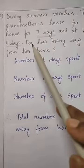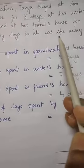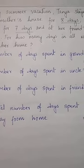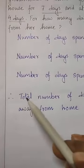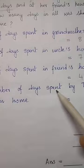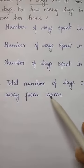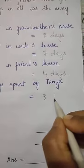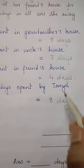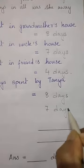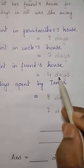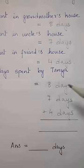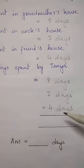The last part is: for how many days in all was she away from her home? That means again you have to add all the days. Total number of days spent by Tanya away from home is equal to 8 days plus 7 days plus 4 days. Here again you have to use the vertical method of addition.